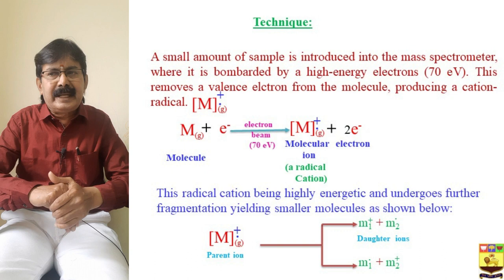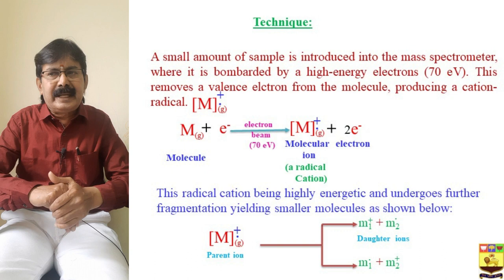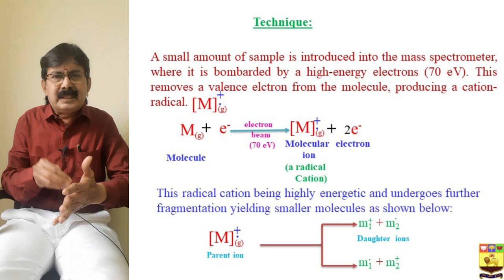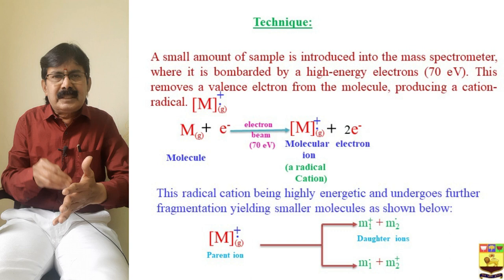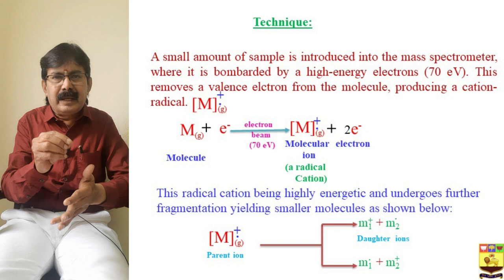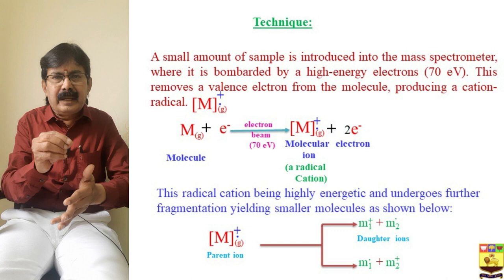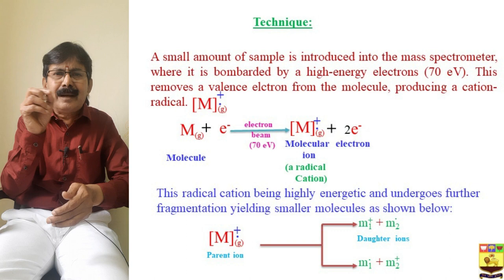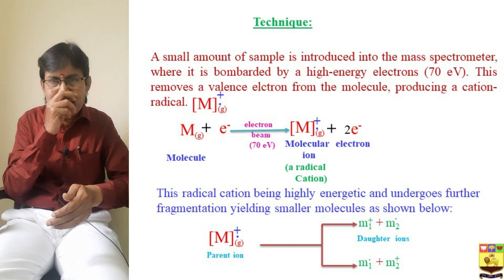The technique uses a small amount of substance — only a few micrograms of sample — introduced into the mass spectrometer where it is bombarded by high energy of 70 electron volts. The molecule is bombarded with a high-energy electron beam so that it removes the valence electron present on the valence shell. This produces a cation radical: M + e⁻ gives M⁺•. The molecular ion peak, also known as the parent ion, is given by M⁺•.